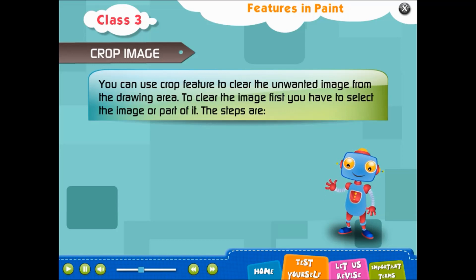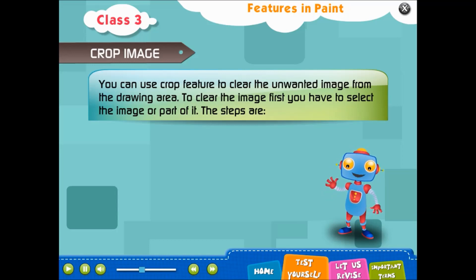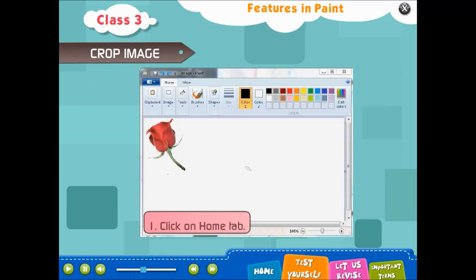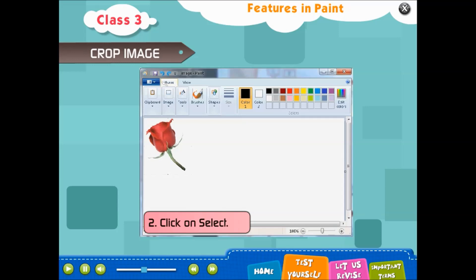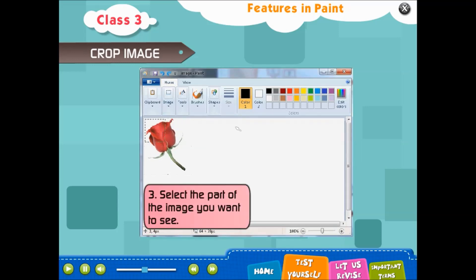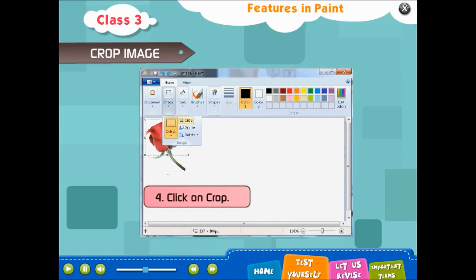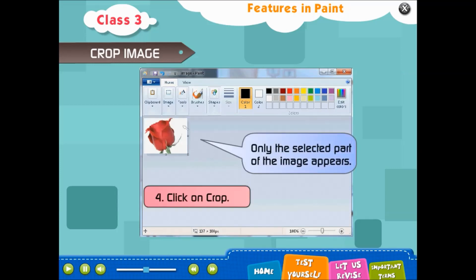Crop image: you can use the crop feature to clear unwanted parts of the image from the drawing area. To crop the image, you first have to select it. Steps: 1. Click on Home tab. 2. Click on Select. 3. Select the part of the image you want to keep. 4. Click on Crop. Only the selected part of the image appears.